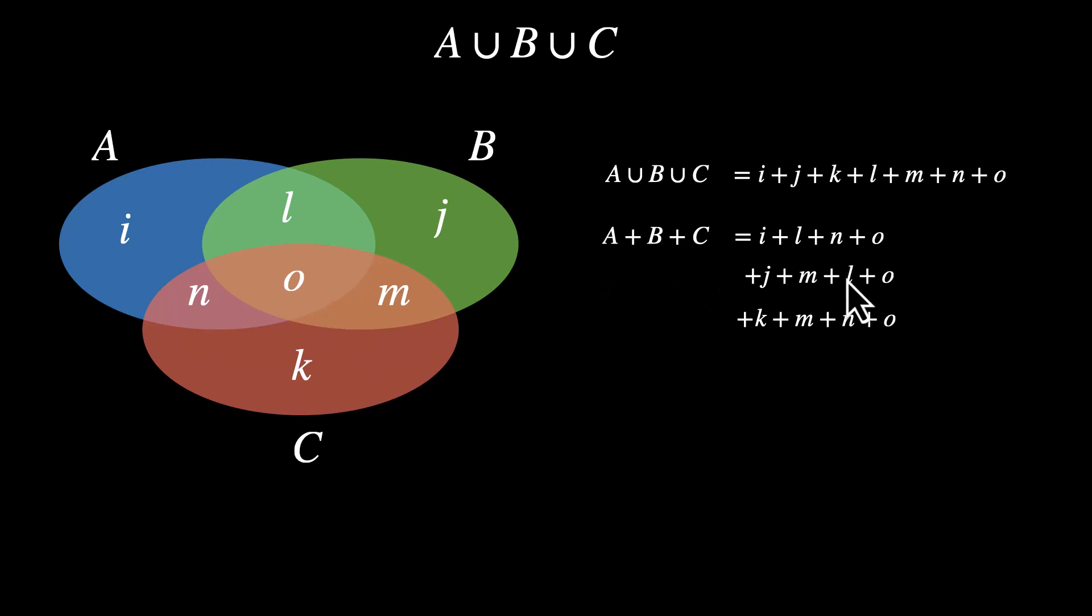What should we subtract? So we only need one L and one O. We have two L's and three O's. So let's subtract A intersection B. When we do that, we subtract L plus O from this. Similarly, we can subtract B intersection C. That will be minus M plus O. We're subtracting M and O. And then we can subtract C intersection A. This is minus N plus O.